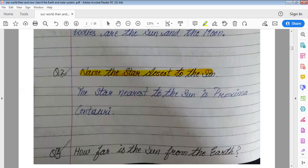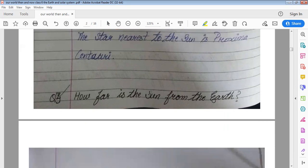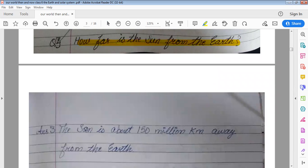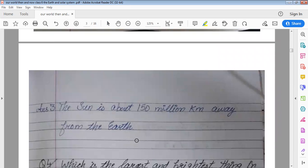Name the star closest to the sun. The star nearest to the sun is Proxima Centurion. How far is the sun from the earth? The sun is about 150 million kilometer away from the earth.